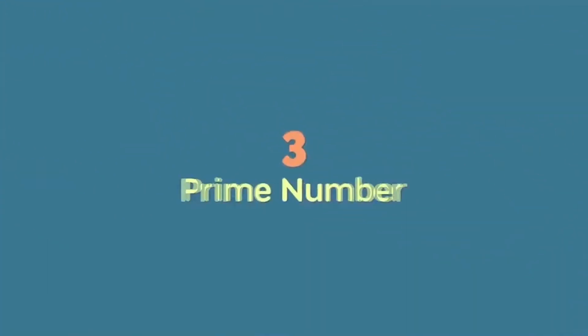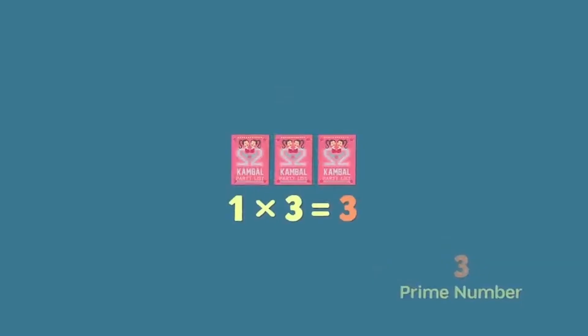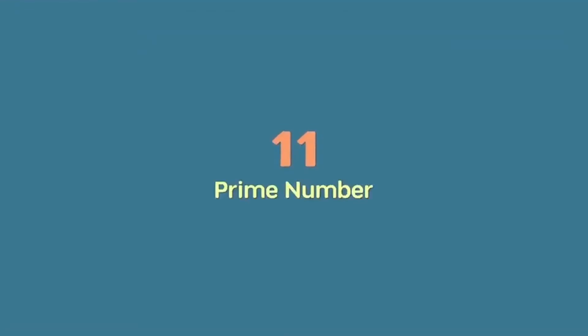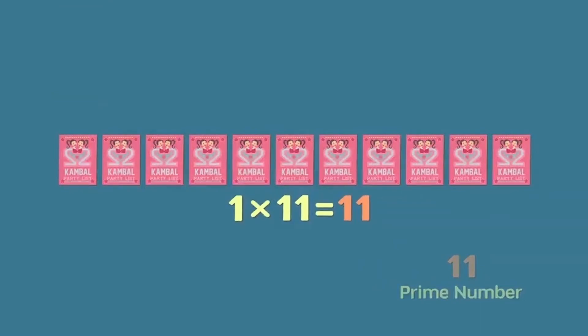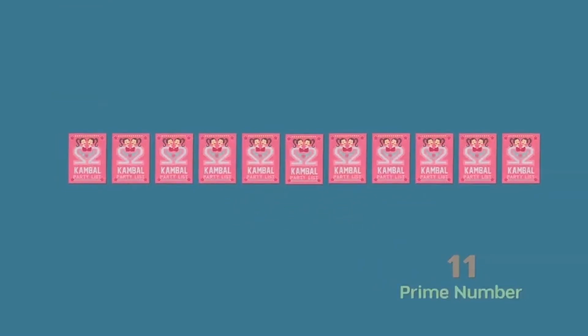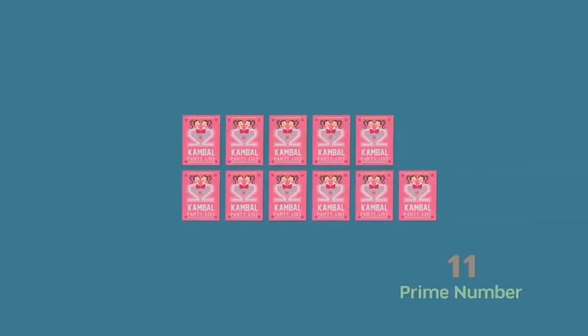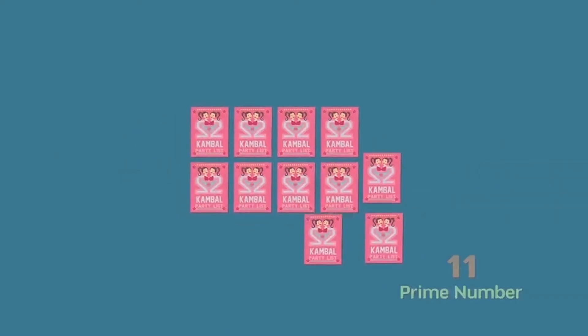Pero ang 3, na isang prime number, isang paraan lang ang pwedeng ayusin na walang sasobra. Kapag pinilit, ganito ang kalalabasan — may sobra, hindi balanced. Isang example pa: ang 11, prime number. Sa ganitong paraan lang ito maayos na balanced o eskwalado. Hindi pwedeng ganito, o ganito.